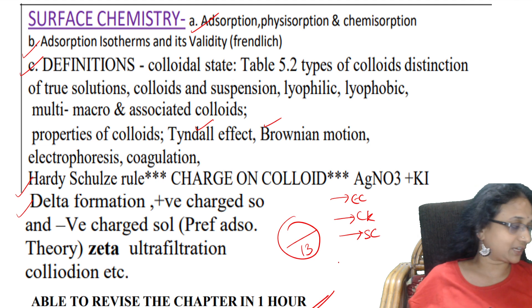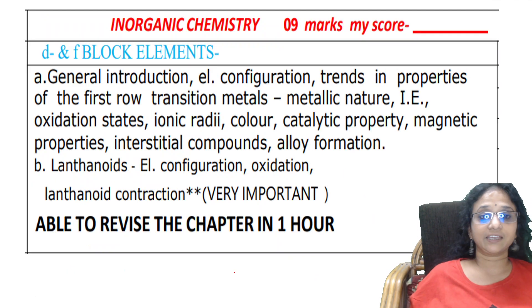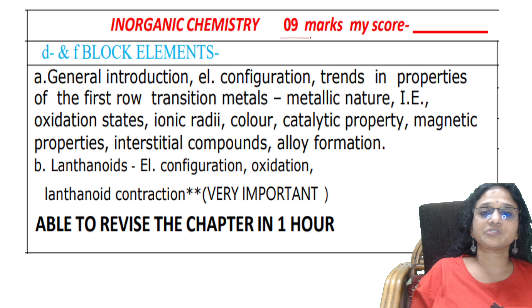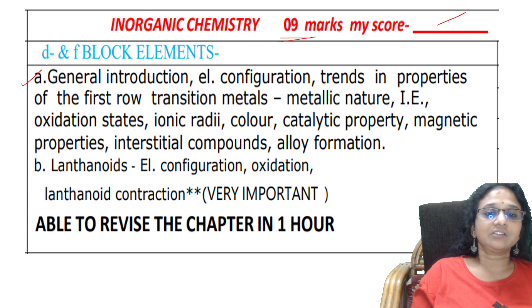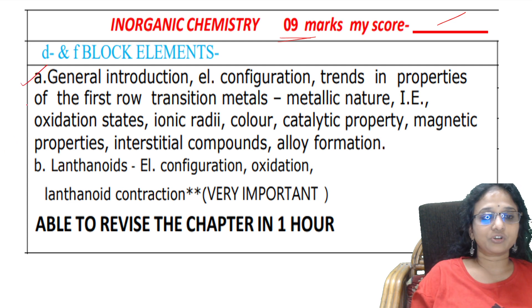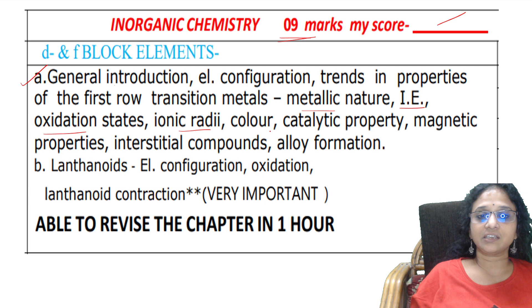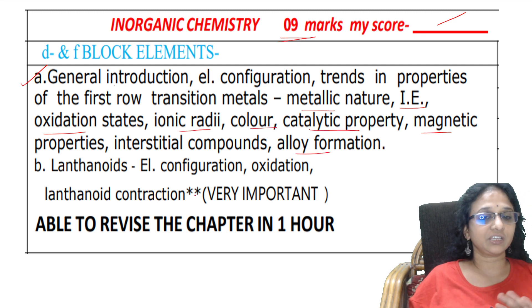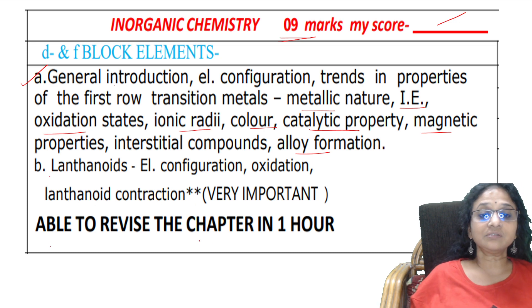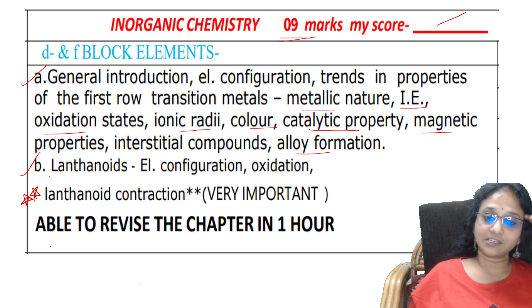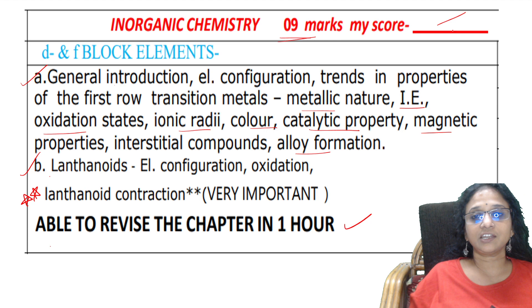After that comes inorganic chemistry, which is for 9 marks. Note your score. In general introduction, concentrate on all transition metal properties: metallic nature, ionization energy, oxidation state, ionic radii, color property, catalytic property, magnetic property, interstitial compounds, and alloy formation. Lanthanide contraction is very very important - you will definitely get a question on it. See that you revise the chapter in one hour.